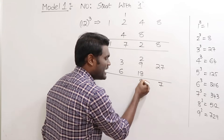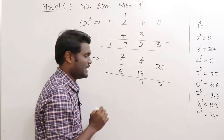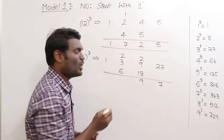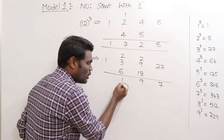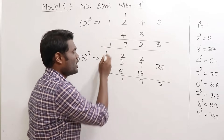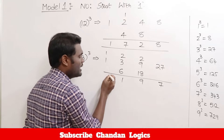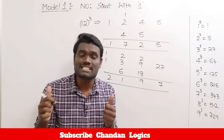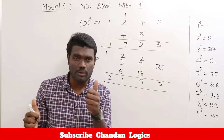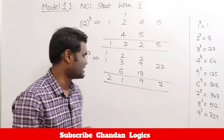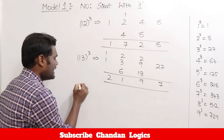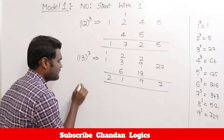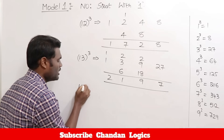Continuing the addition: 6 plus 3 is 9, plus 2 carry is 11 — write 1, carry 1; then 1 plus 1 is 2. So 13 cubed equals 2197. Let's try one more: 15 cubed. Follow the same procedure — write digits 1 and 5.